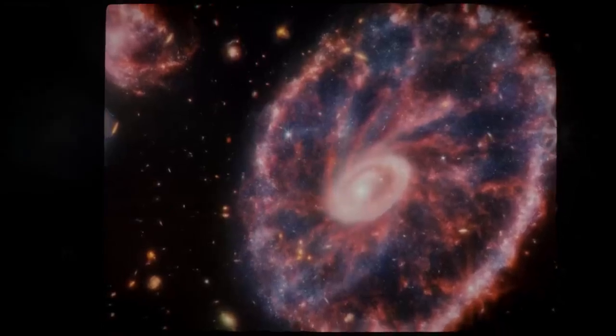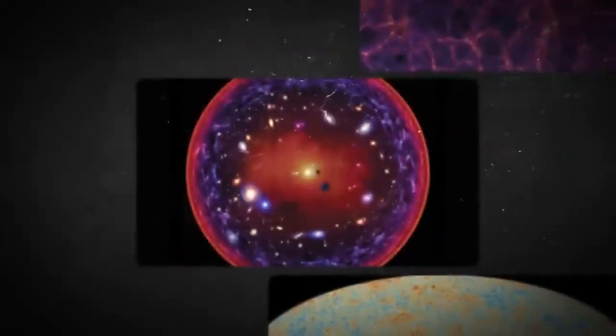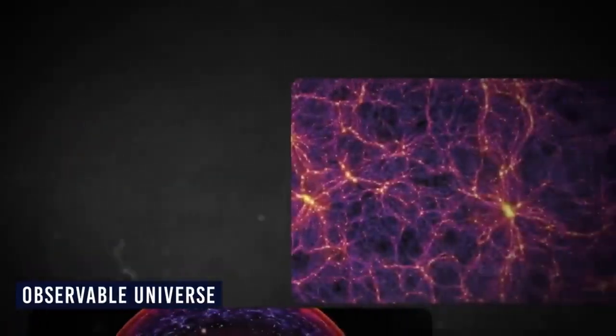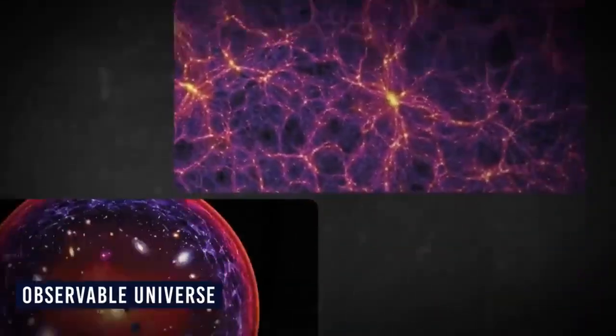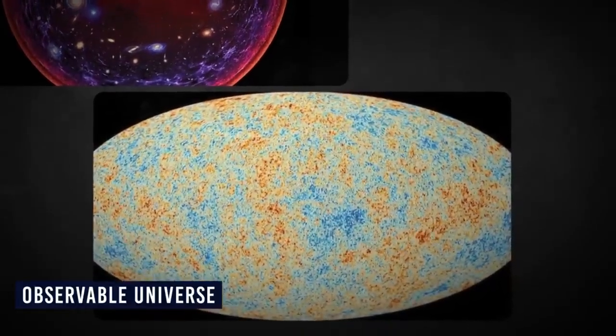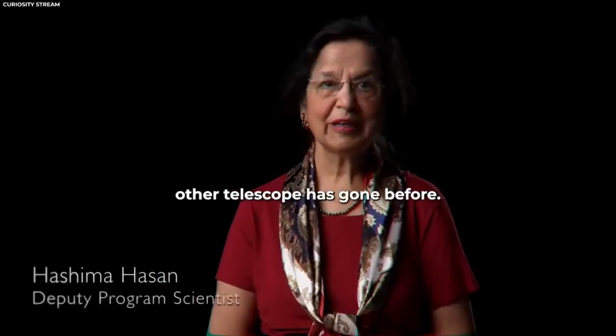When we talk about the edge of the universe, it's essential to understand the concept of the observable universe. The observable universe includes everything that we can see, measure, and study from Earth or our space-based telescopes and exploratory probes at the present time. It consists of stars, galaxies, and other celestial objects that are within our observational reach.